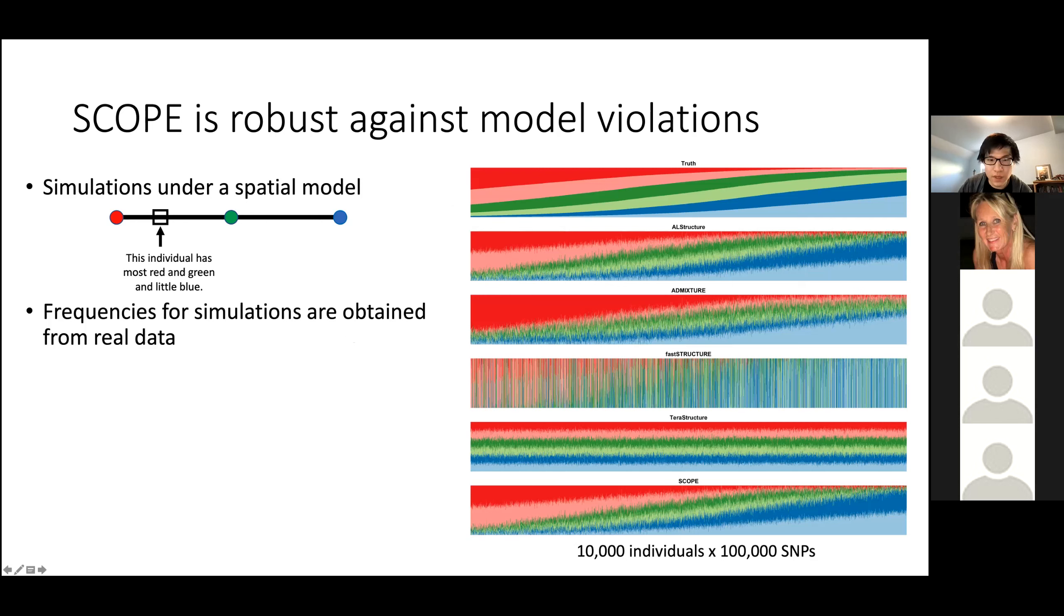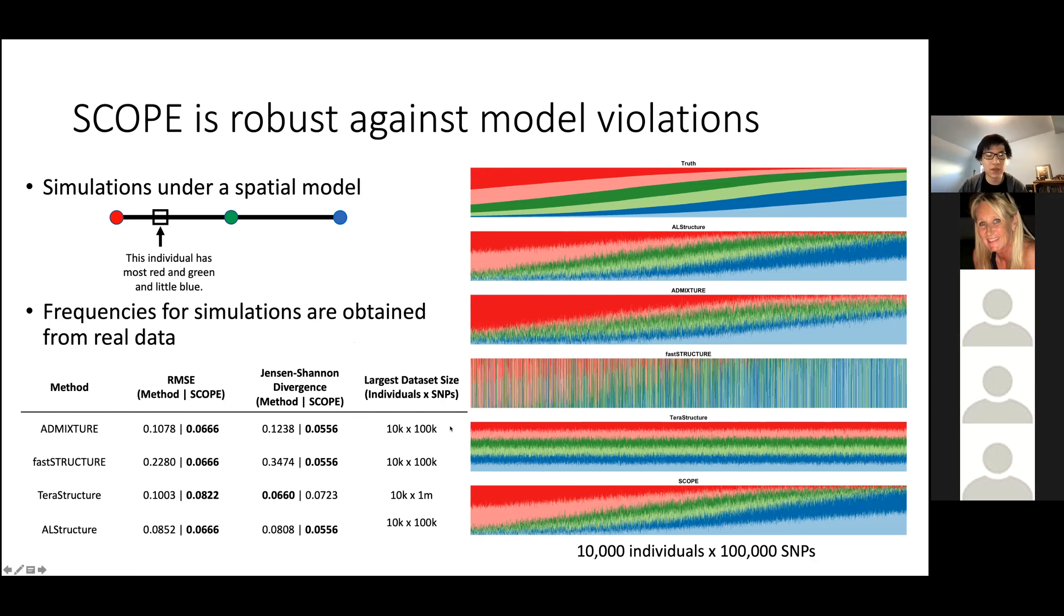This was on 10,000 by 100,000 individuals. We find that our method is able to do a lot better, though all methods do a little bit worse compared to the standard admixture structure model. But for the most part, we see improvements and find that our model is quite robust under both metrics of root mean square error and Jensen-Shannon divergence.